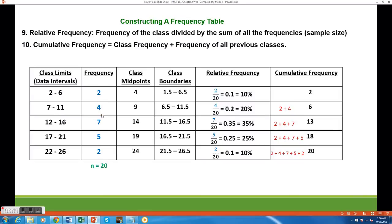And I get 2 plus 4 or 6. I continue this process for all 5 data ranges. The cumulative frequency of the last class should always be equal to how many data values you have.